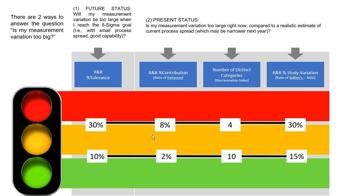If the gauge R&R percentage is between 2% and 8%, it is really very good. If it is between 15% and 30%, it is okay. There is higher sensitivity when dealing with life-and-death situations like in a pharmaceutical company — all four parameters should be green for the gauge to pass. Otherwise, we can accept the gauge when it is amber as well.